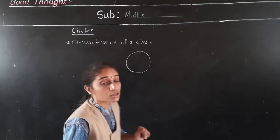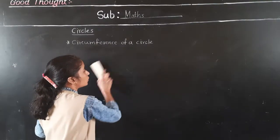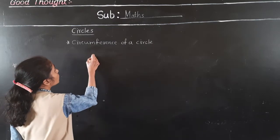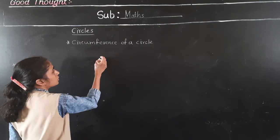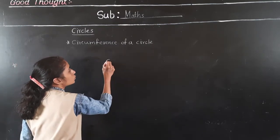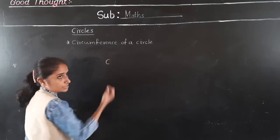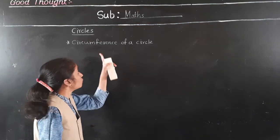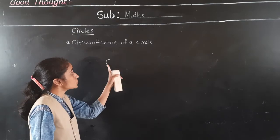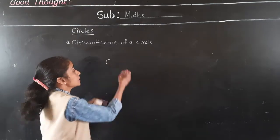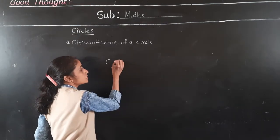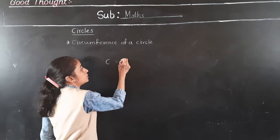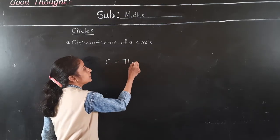Now, what is the formula to find the circumference of a circle? We write C for circumference. The circumference of a circle is equal to π D — that is, pi multiplied by the diameter.